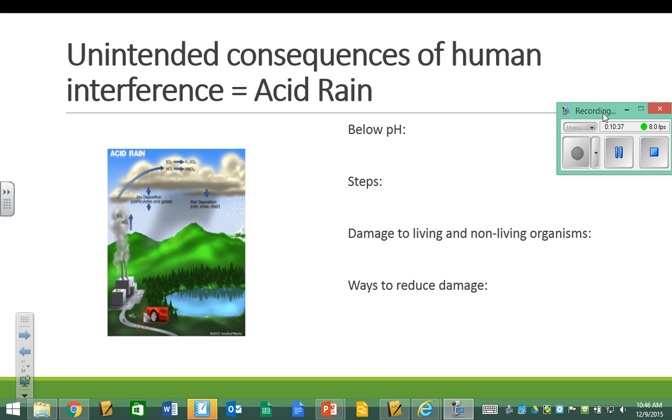I put the word unintended here because generally, as a rule, we are not on purpose trying to ruin our planet. It just seems to keep happening as a byproduct of other things that we are doing. So for the water cycle, one, certainly not the only, but one of the unintended consequences of human interference would be acid rain.